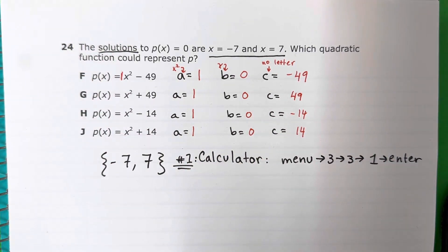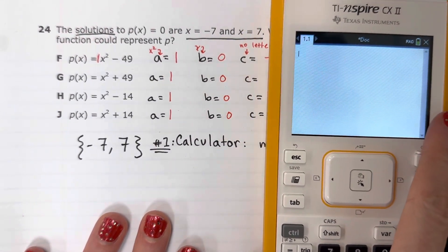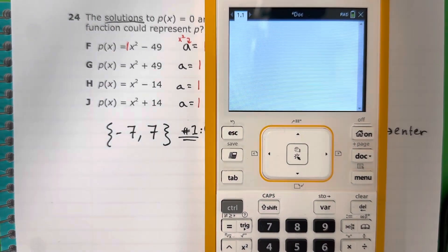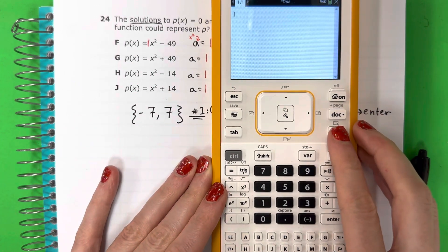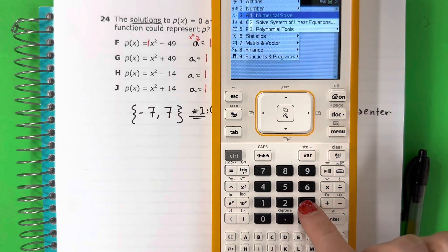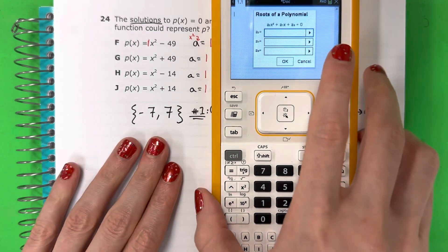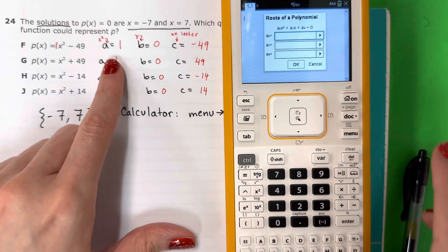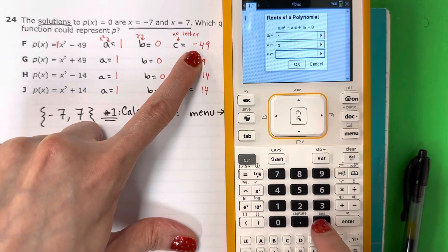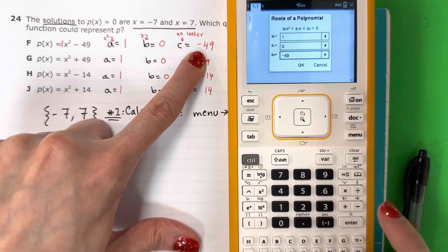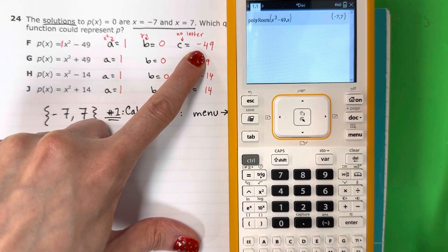We're going to do these one by one in the calculator. You're going to do menu 3, 3, 1, enter. Let's do the first one, F. A is 1, go down, B is 0, go down, C is -49. Push enter, enter, enter. This is your answer: -7 and 7.